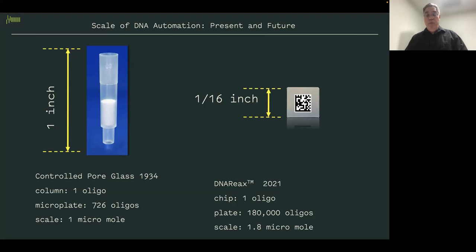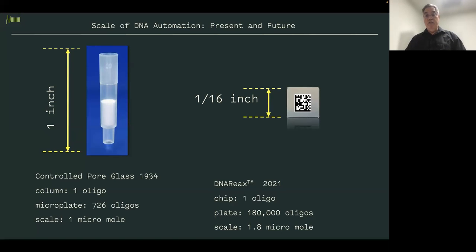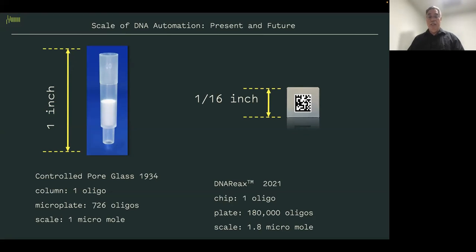We are now moving to a plate that is 10 by 10 centimeters for our internal synthesizer. We want very large chips where we can do up to 180,000 oligos maximum. The scale of this chip will allow us to do 1.8 micromoles, which is very similar to what can be accomplished with standard low-automation methods such as controlled pore glass.